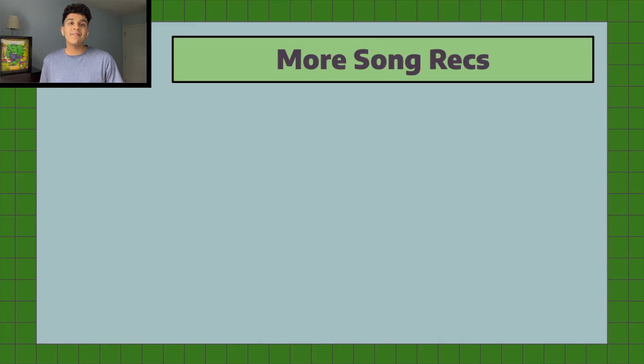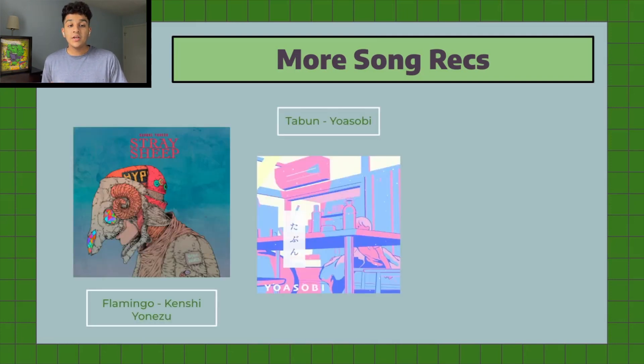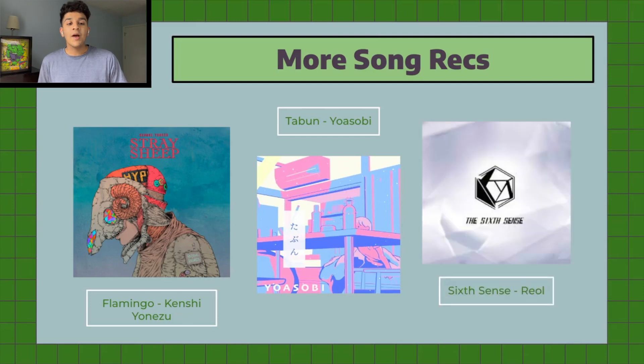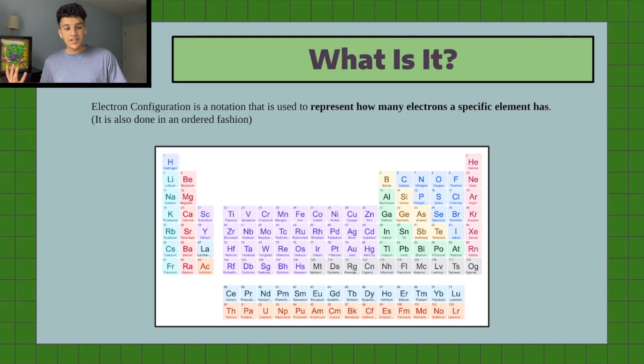Hey guys, Arnav here back with another YouTube video. Today we're only going to be focusing on electron configuration, as I'm now making videos that focus on specific topics in each unit. Thanks for your support — don't forget to like and subscribe. I also wanted to keep up my tradition of giving Japanese song recommendations, since I'm quite into J-pop. The three songs for today are Flamingo by Kenshi Yonezu, Tabun by YOASOBI, and Six Cents by Ryo.